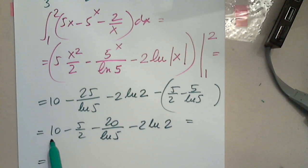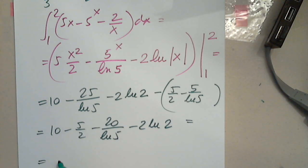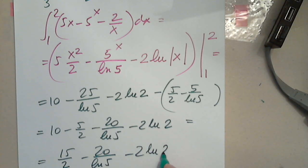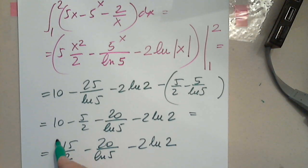So this is 10 minus 5 halves. Negative 25 over natural log 5, but plus 5 over natural log 5 gives negative 20 over natural log 5. And minus 2 natural log 2. Combining the constants: 20 minus 5 is 15, giving 15 halves. And this is the final answer.